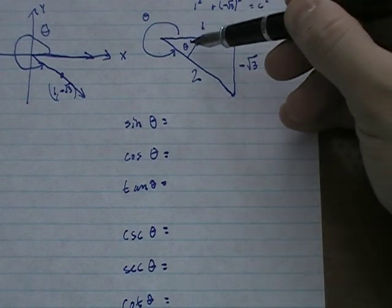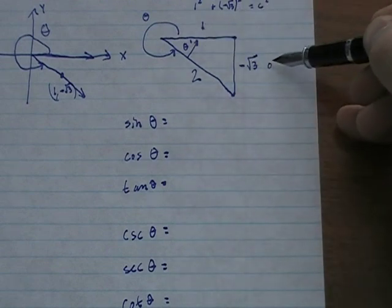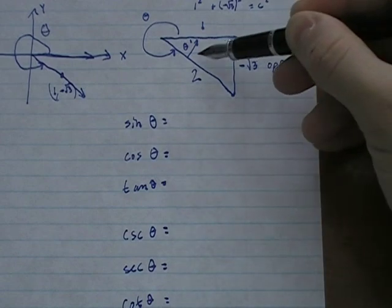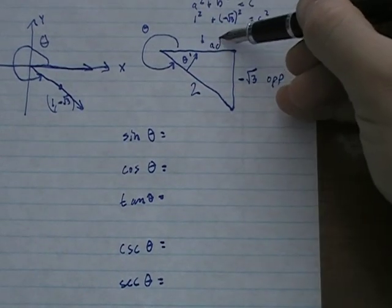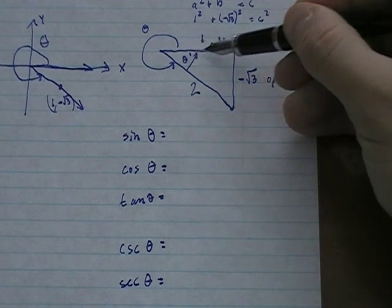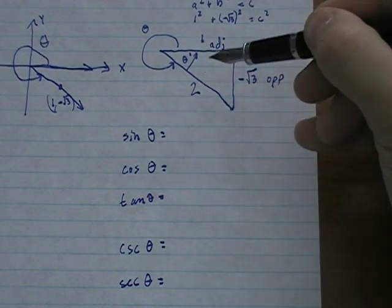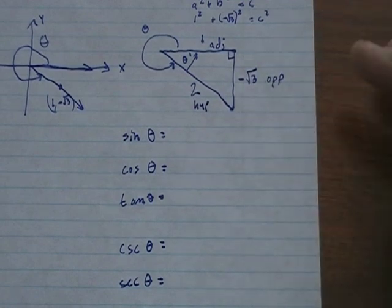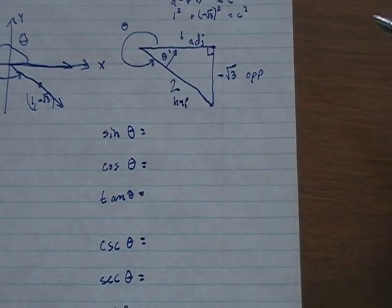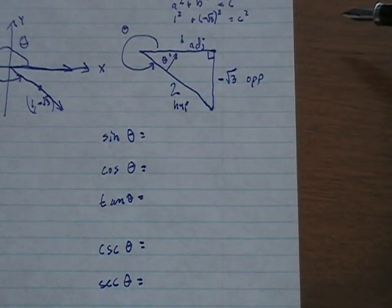Once I know all three sides, looking at theta prime: the side across from theta prime is the opposite side, the side next to theta prime is the adjacent side, and the side across from the 90-degree angle is the hypotenuse. The right triangle definitions of sine, cosine, and tangent work very nicely with this picture.